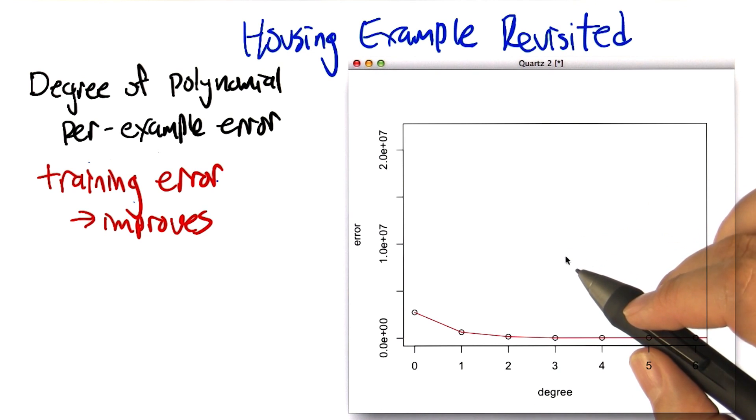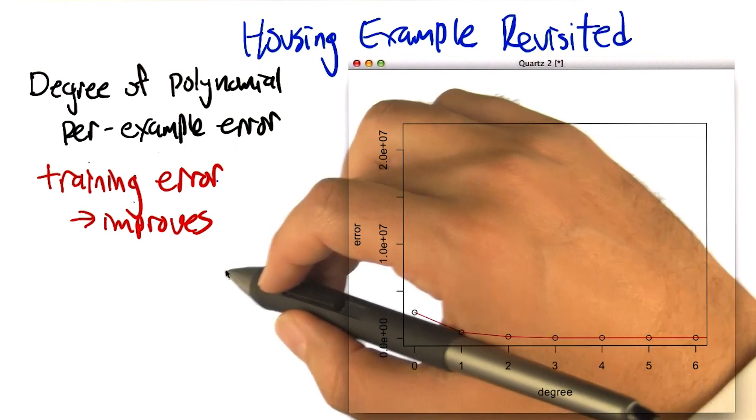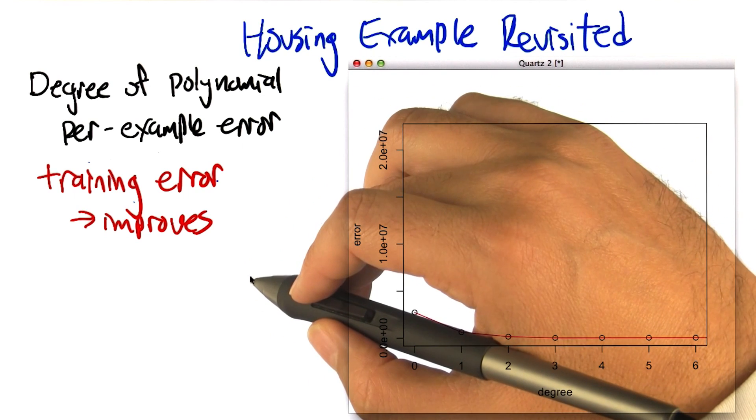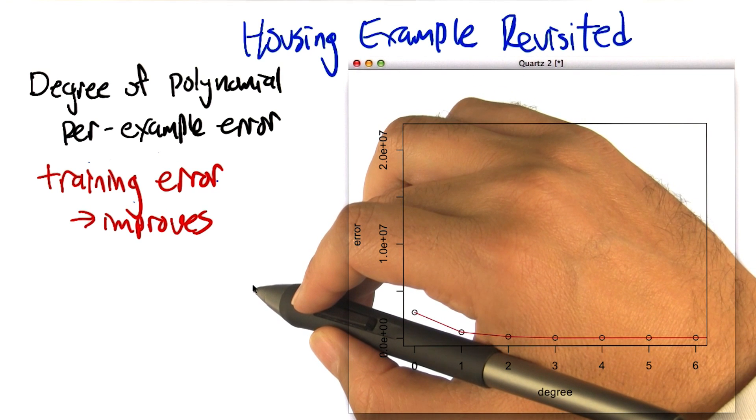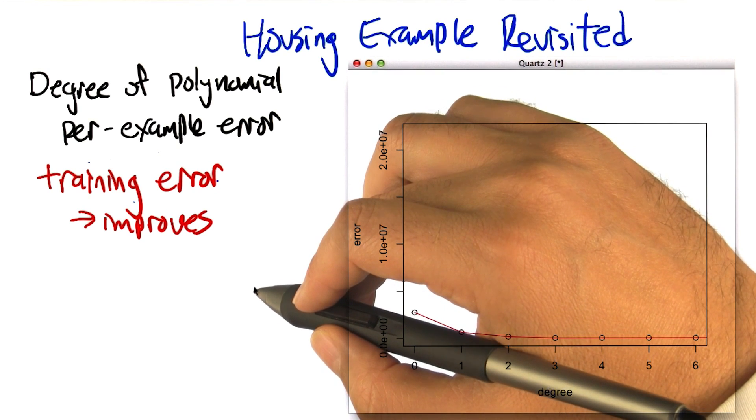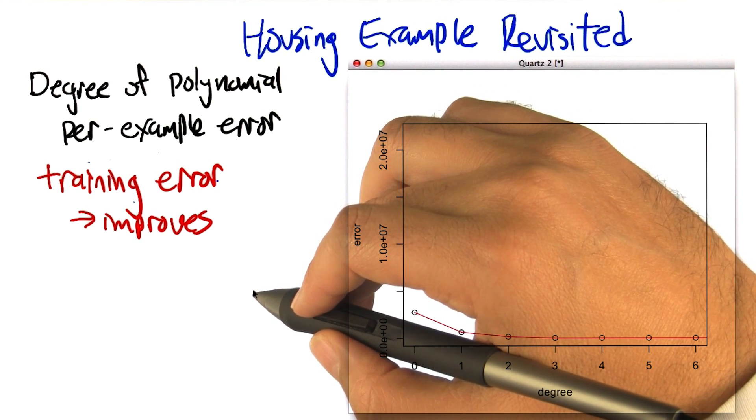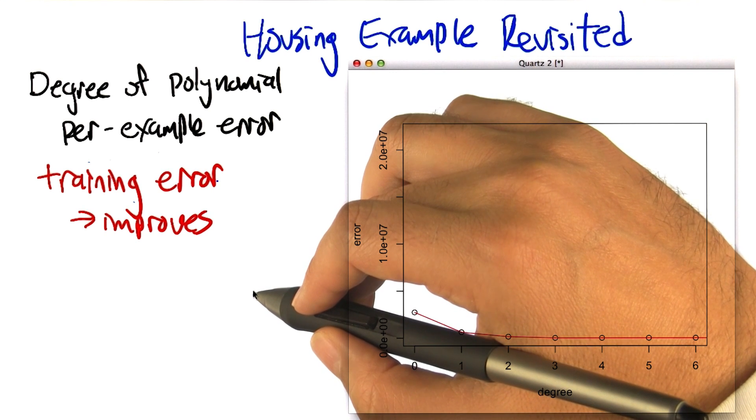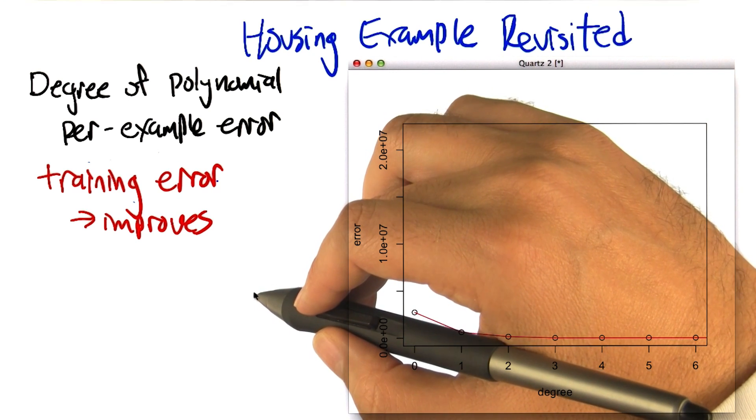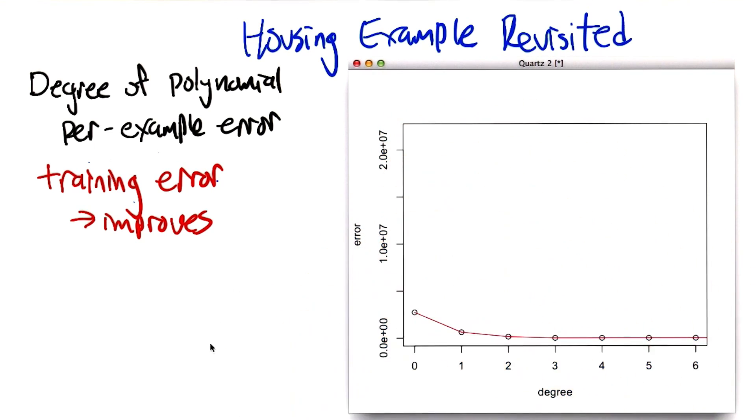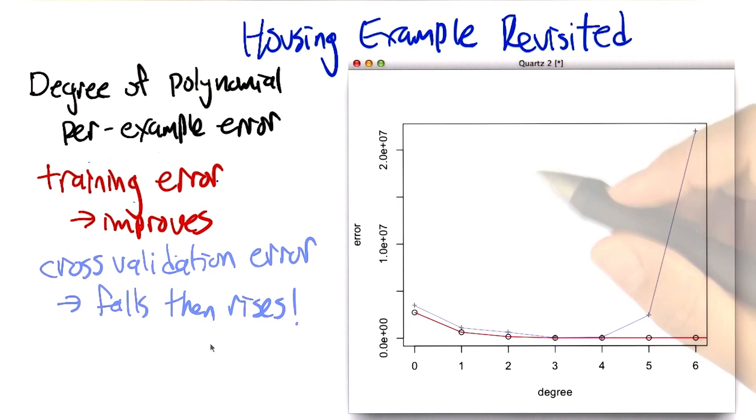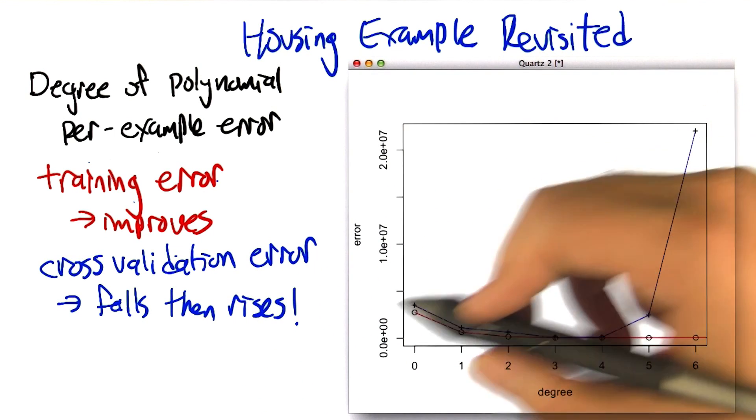But now let's use this idea of cross validation to say, what if we split the data up into chunks and have each chunk being predicted by the rest of the data. Train on the rest of the data, predict on the chunk, repeat that for all the different chunks and average together. So I actually did that, and this is what I got with the cross validation error.